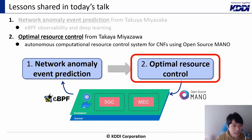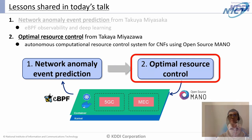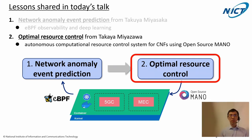With this, I have finished my part on network anomaly event prediction in the 5G network. From the next slide, Miyazawa will talk about optimal resource control. Next, I'm going to introduce our R&D on optimal resource control in cloud-native network functions. My name is Nagai Miyazawa from NICT Japan.